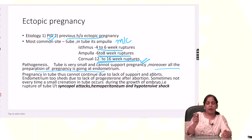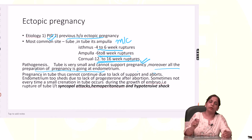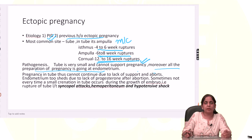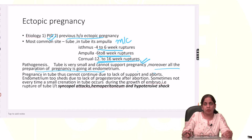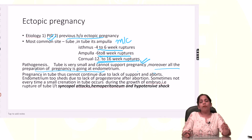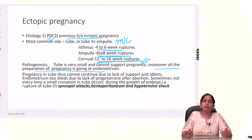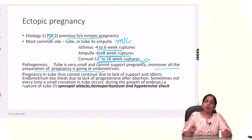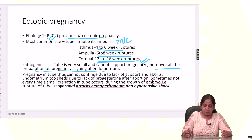The trophoblast is the outer layer of the blastocyst. Trophoblast makes HCG, and that HCG stimulates progesterone from corpus luteum. If the pregnancy doesn't grow much in the tube, then HCG levels are not as good as in a normal uterine pregnancy.